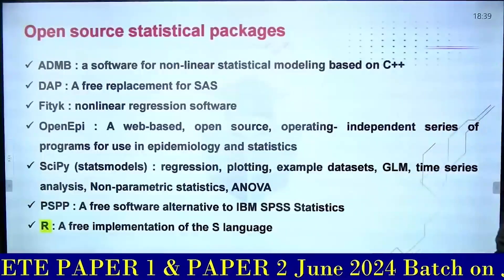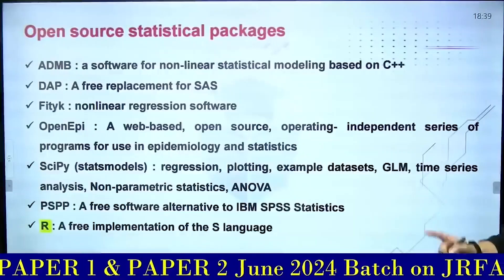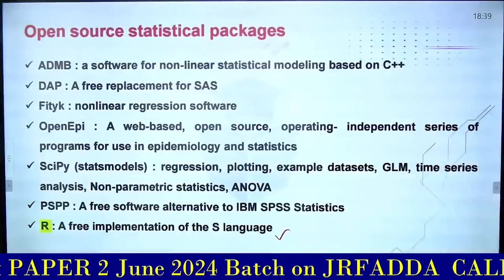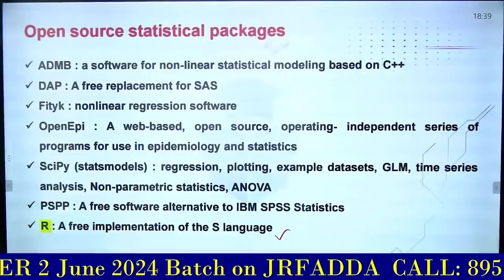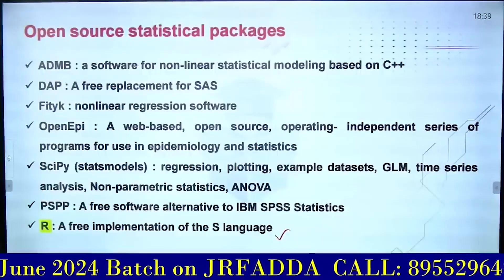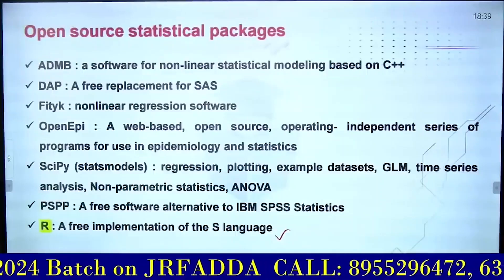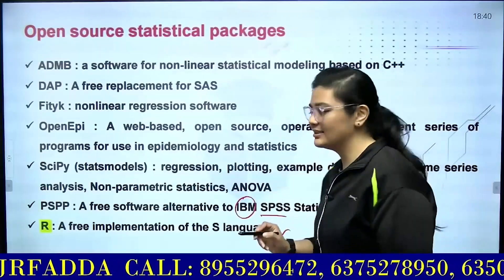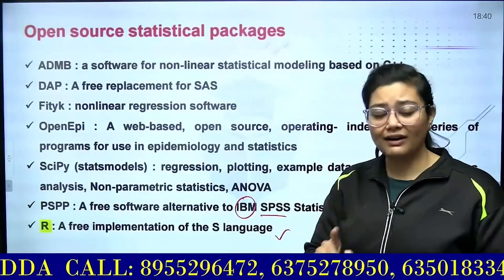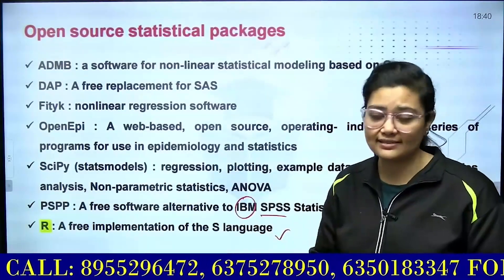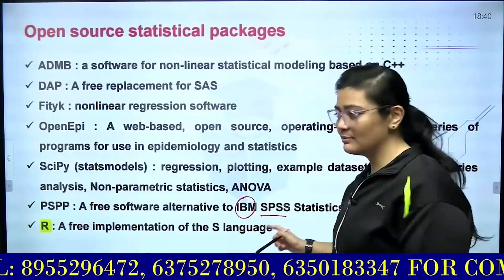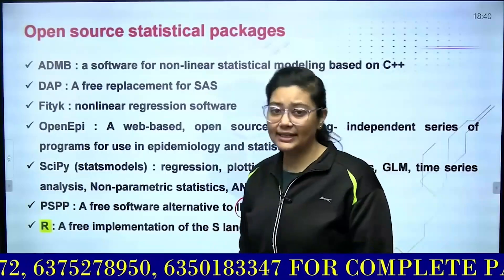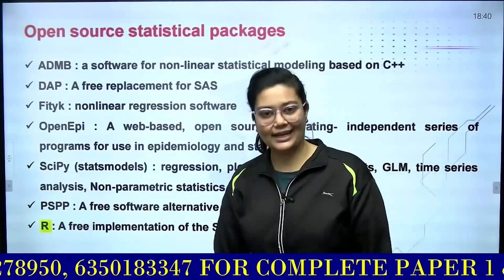Let's talk about statistical software that is open source. There is a question about the R tool — it is an implementation of the S language. Its free-of-cost implementation makes it open source. Then, if I talk about PSPP — it is free software released by IBM, which stands for International Business Machines. PSPP comes from Statistical Package for Social Sciences.